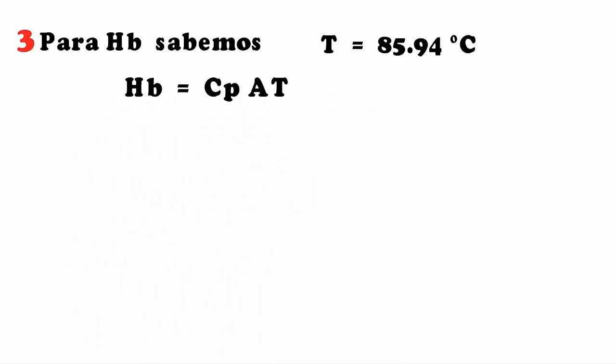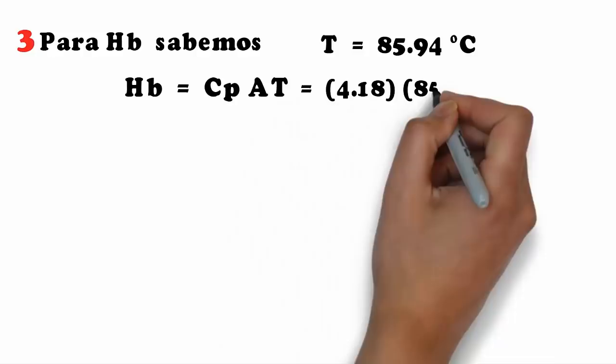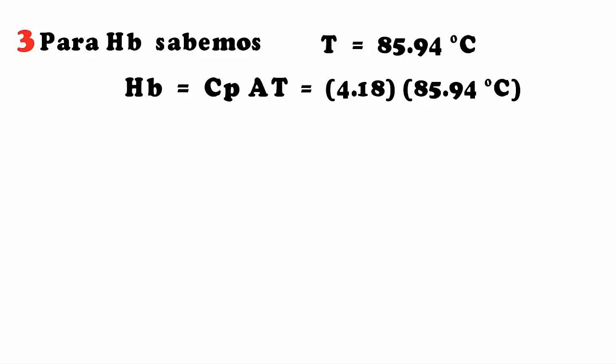H = 4.18 × 85.94, giving a result of 359.22 kJ/kg.